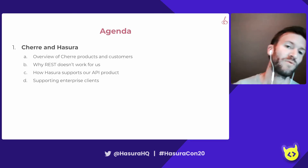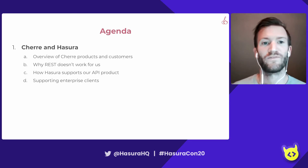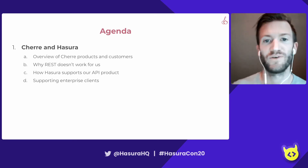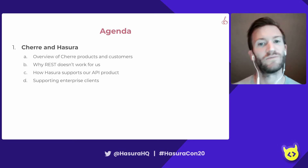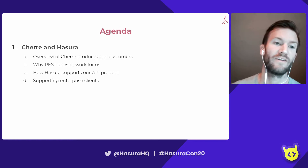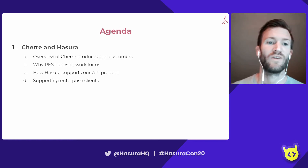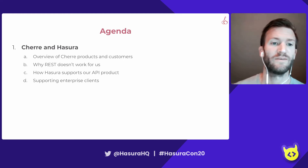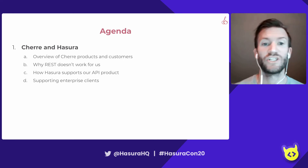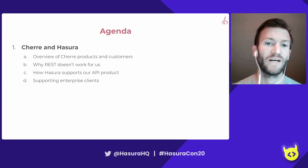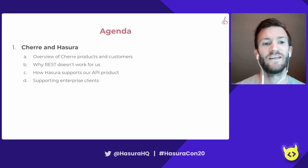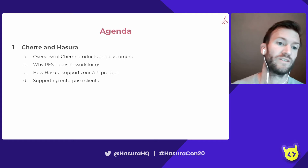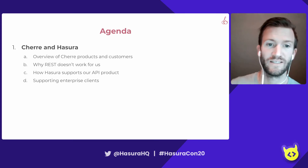So a little bit about what we're going to talk about. First, I'll go over who is Cherry, what kind of products do we have, and what sorts of customers do we service. I'll then start talking about why a REST API doesn't work for us in this scenario. And then we'll go into how Azure helps support our API products and our clients, and how Azure really helps us support enterprise clients specifically.